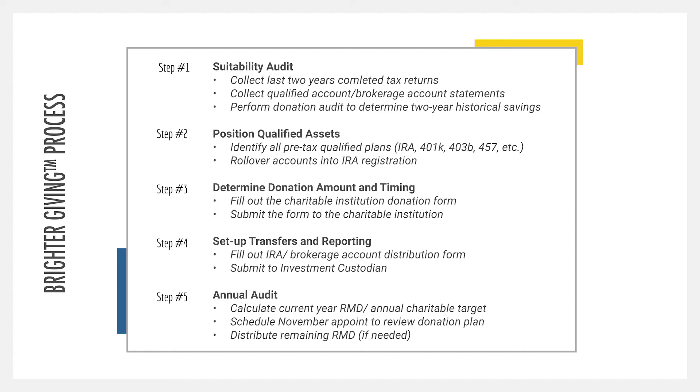Find out from those institutions if they require a charitable institution donation form to give credit to the donor, or if they would be fine with just receiving a payment. The second part of step three is filling out those forms and getting them submitted. This step is not about making those donations yet — it's just understanding whether those charitable institutions require any special documentation. Then determine the timing: are you going to make those donations on a monthly, semi-annual, or annual basis?